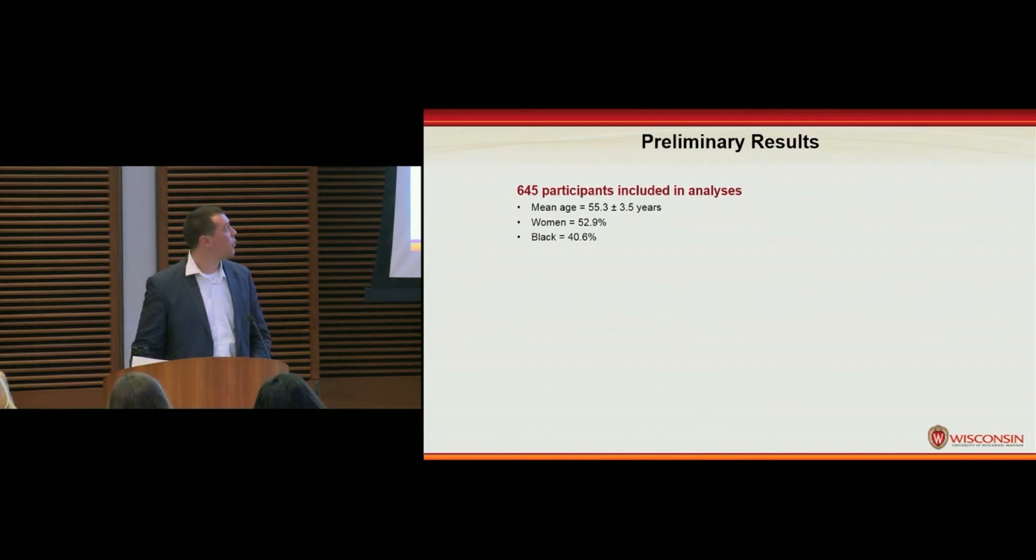We had 645 individuals in the study. Mean age was 55, approximately half were women, 40% were Black. We observed a normal distribution with respect to SES scores, with the majority of individuals falling in the middle of the scale, and about 12% on both the low and high end.